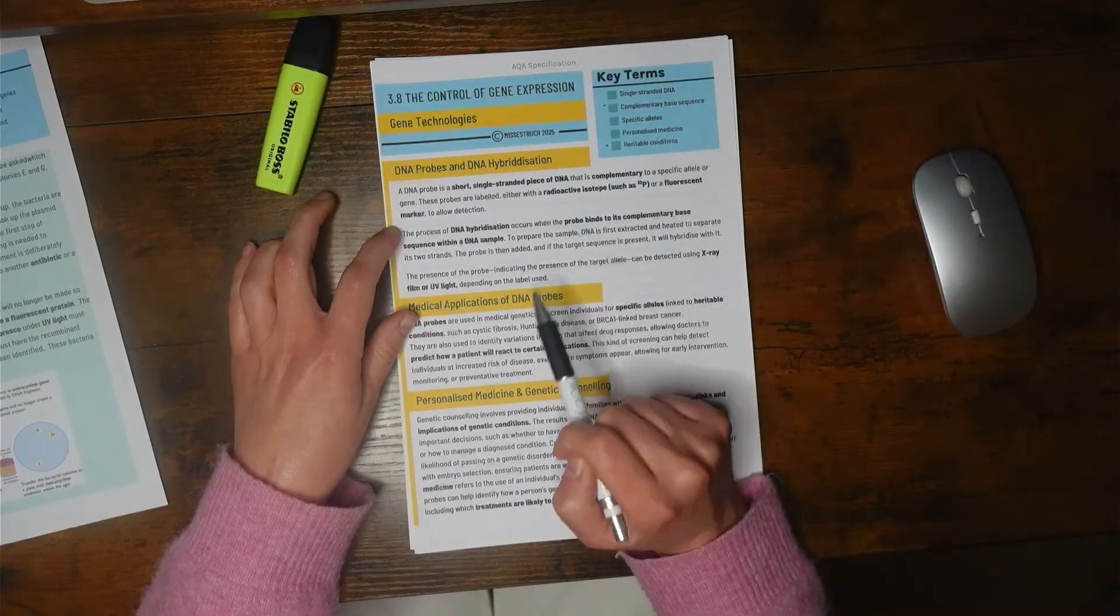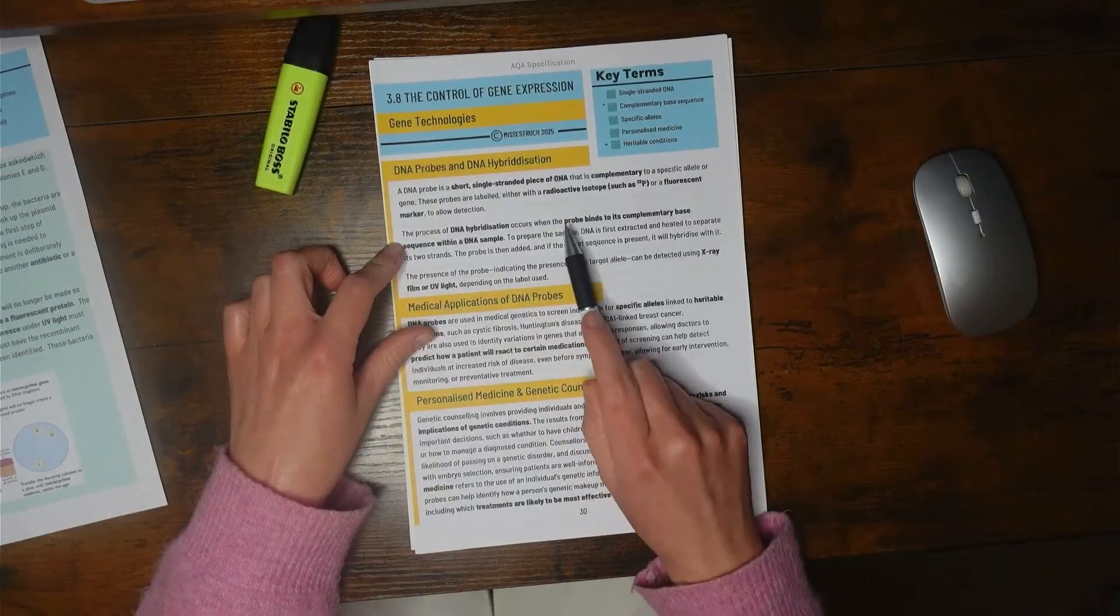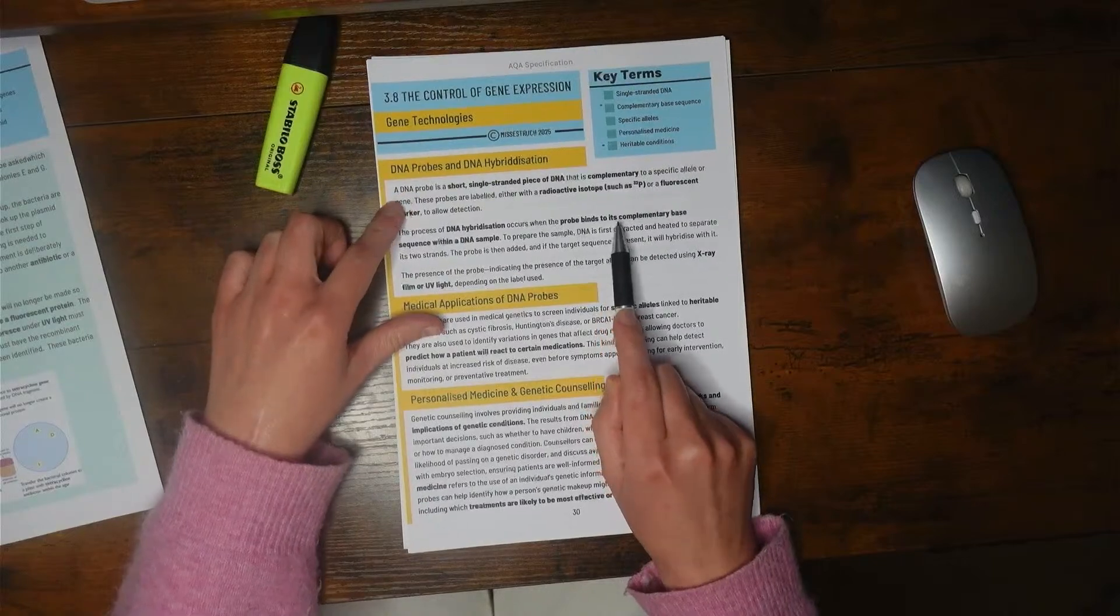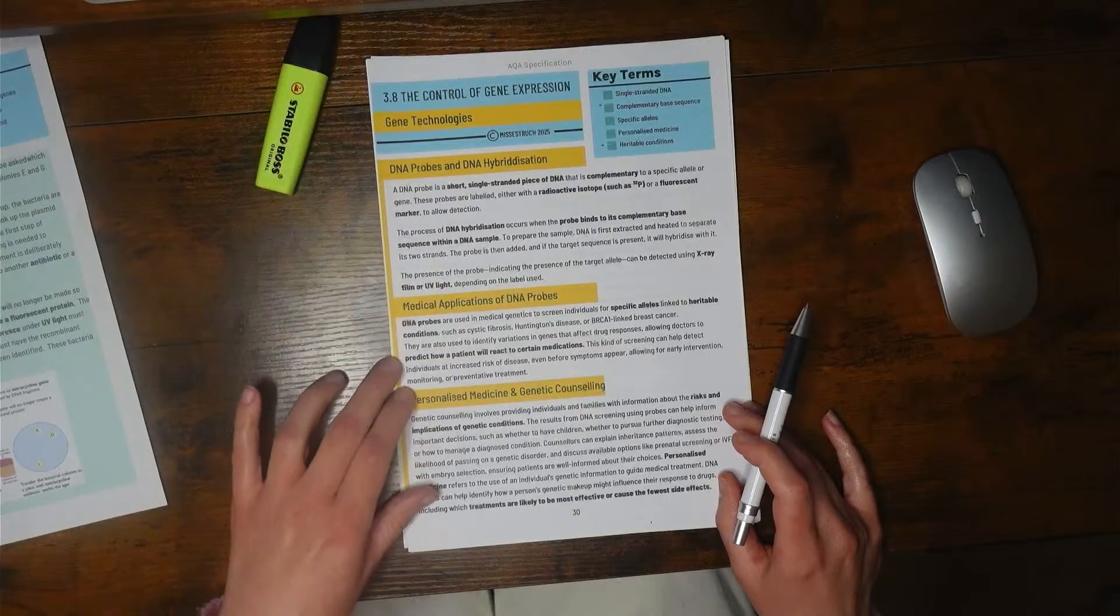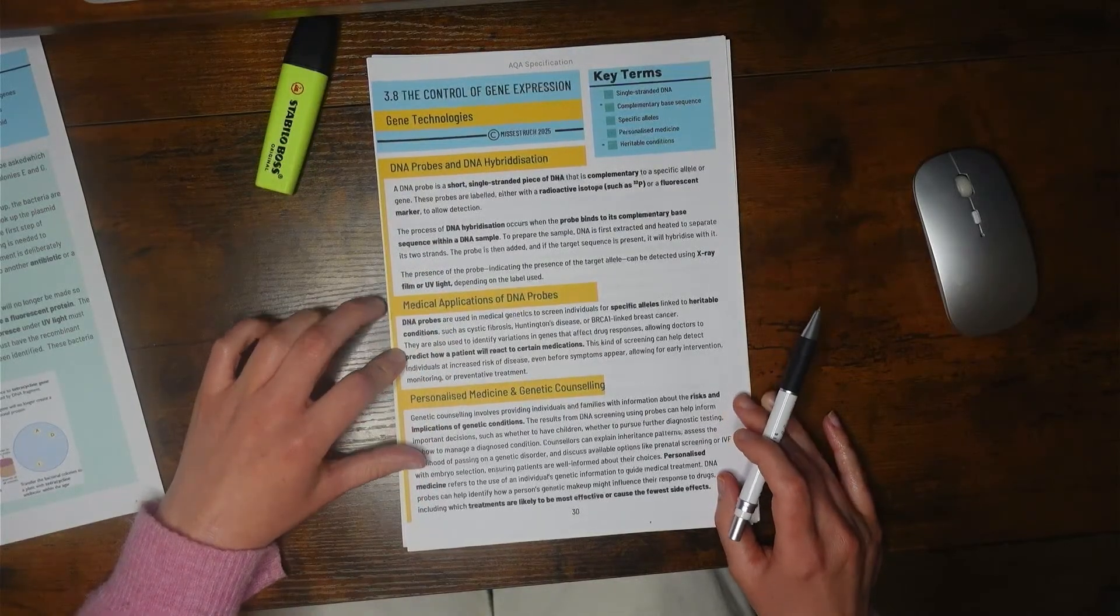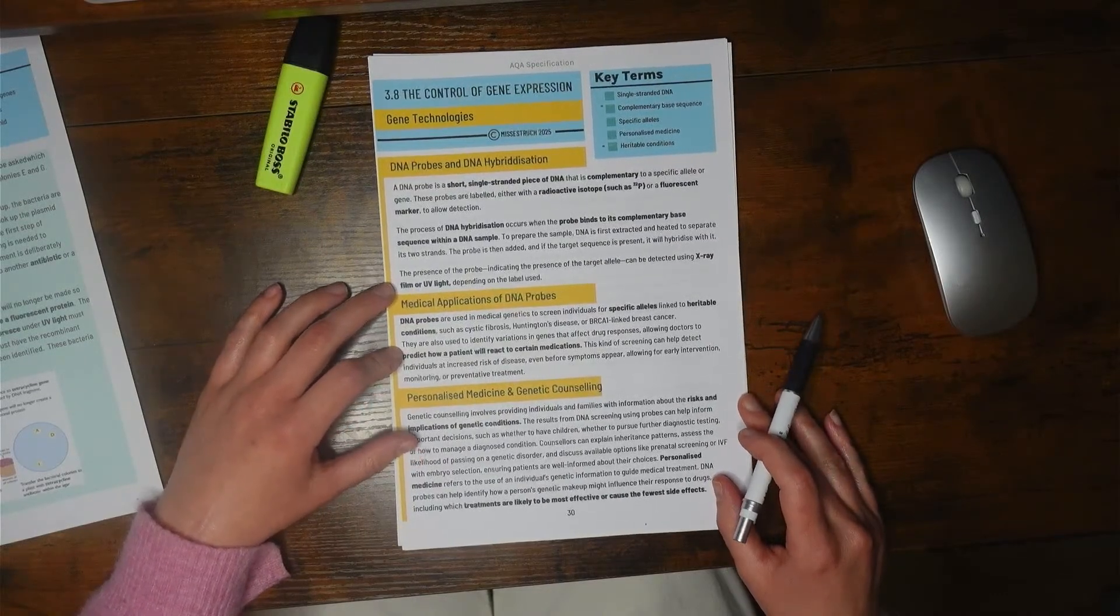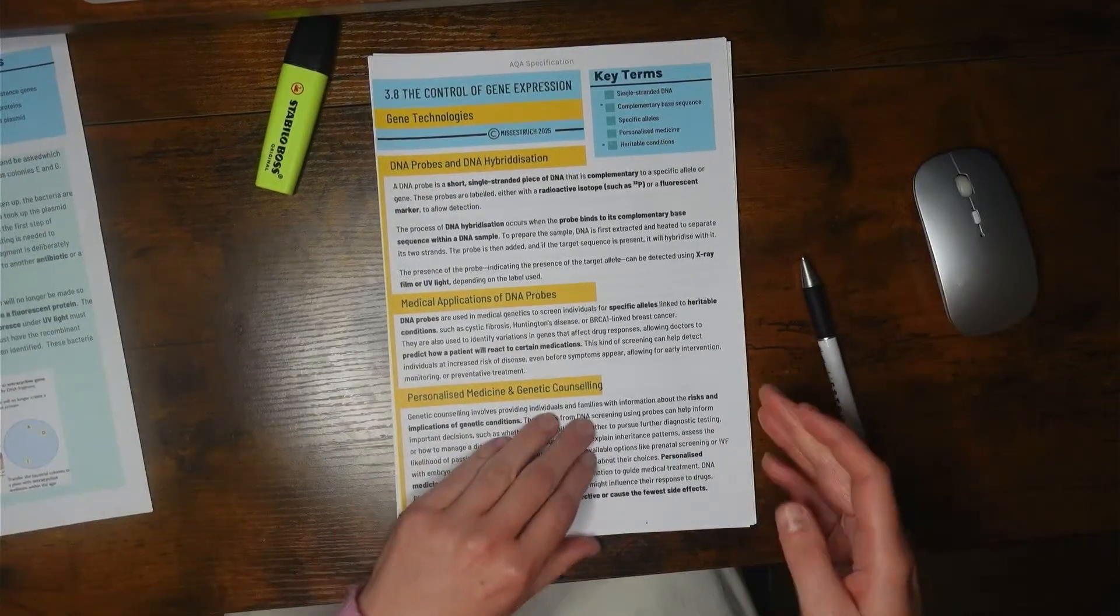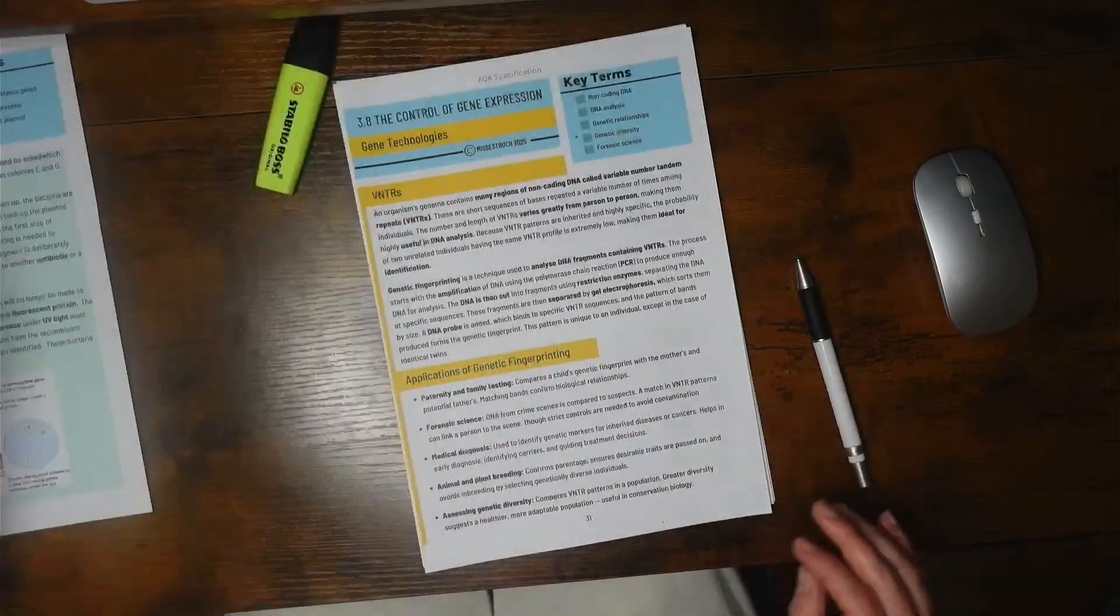DNA hybridization is occurring when the DNA probe binds this complementary base sequence within a DNA sample. This is the premise behind the idea of screening to see if someone might have the alleles for a particular disease, or it could be linked to personal medicine as well.